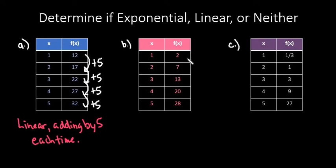All right, for the second one, if we look at this, if we first look at adding from 2 to 7, we can see that we added 5. Well, from 7 to 13, we can see that we now added 6. So we can say that this is definitely not going to be linear because we have a different number here.